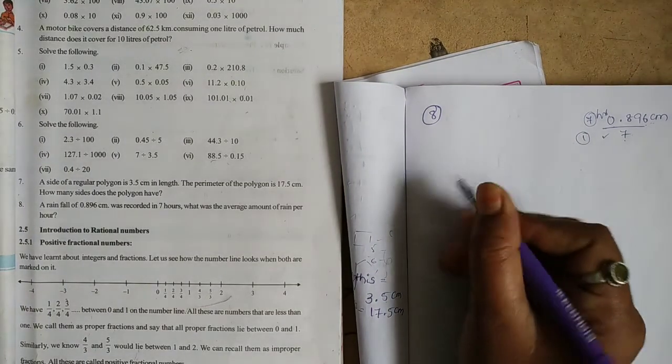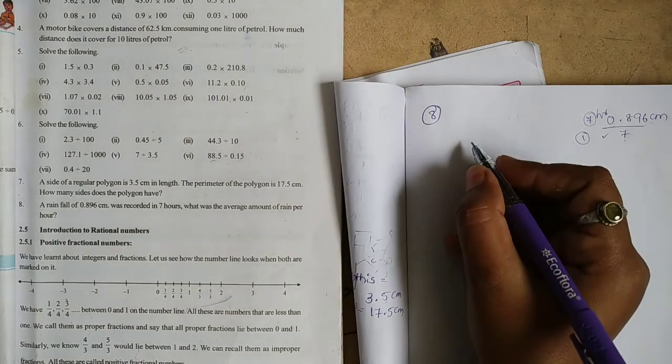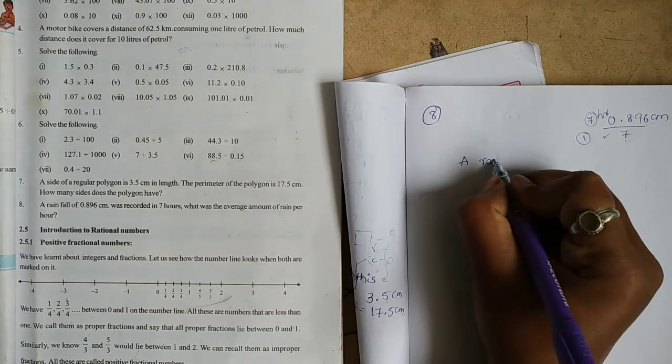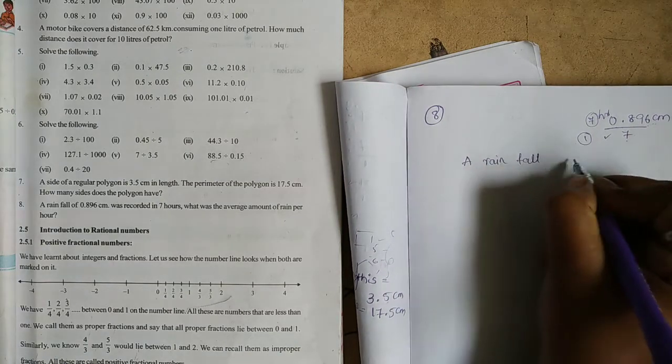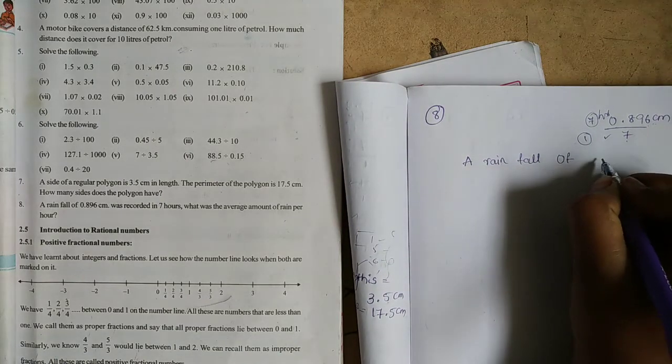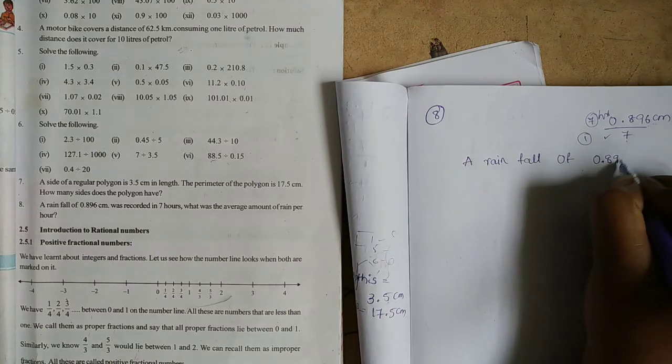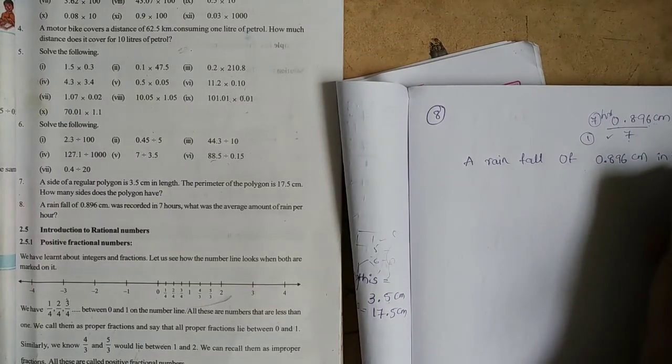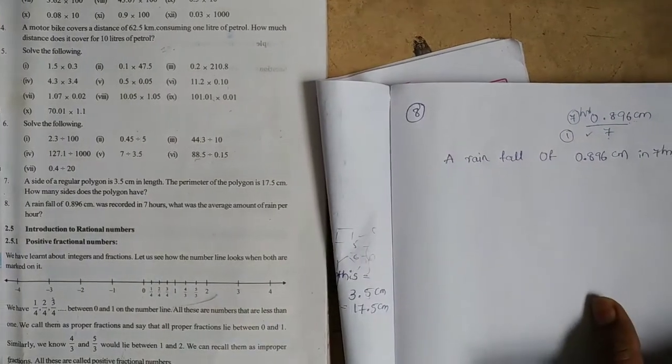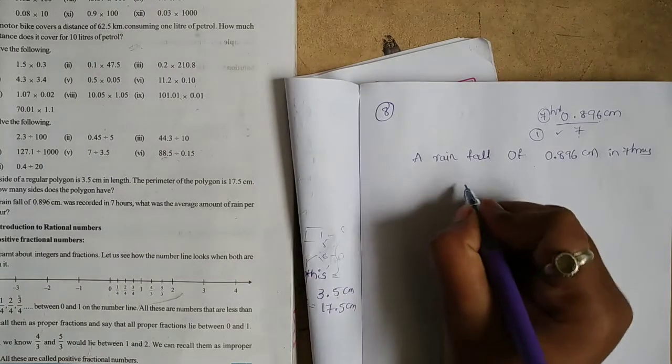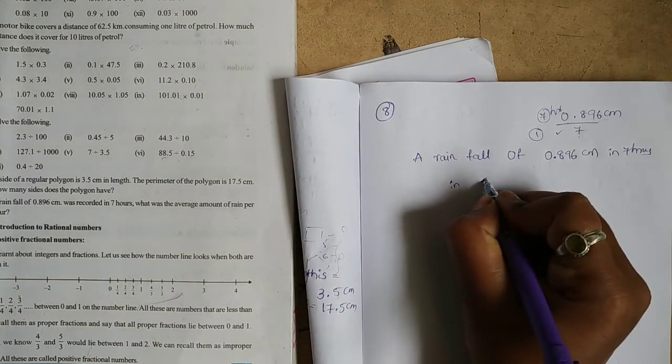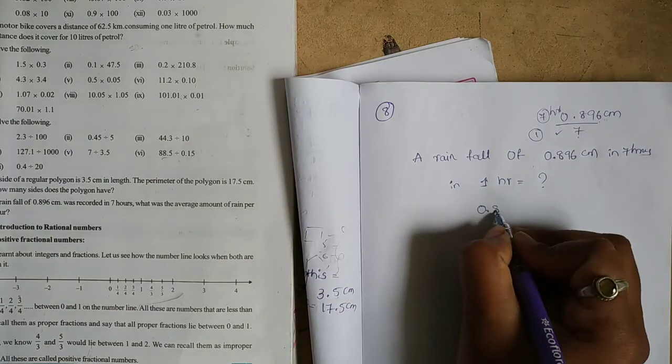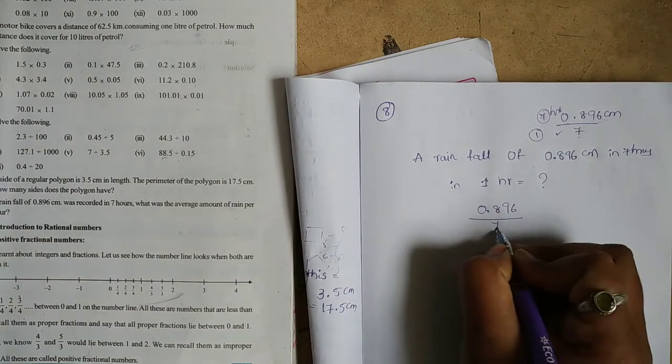It's very simple. Here we have a working problem. Now a rainfall of 0.996 cm in 7 hours. In 1 hour, we find out. So, 0.896 divided by 7.